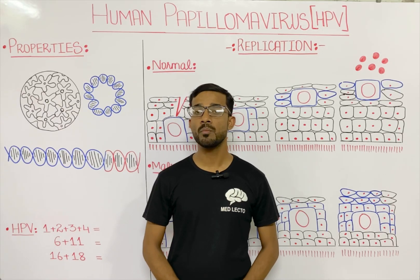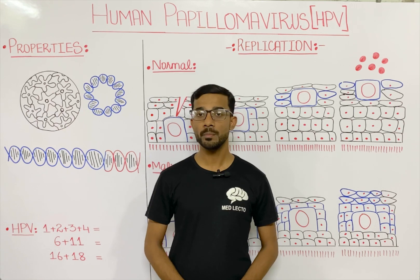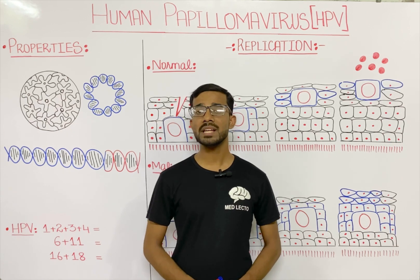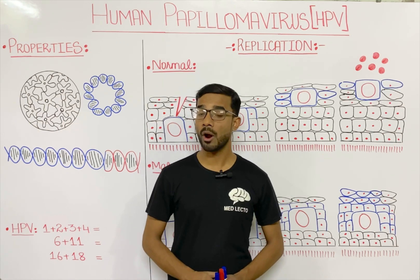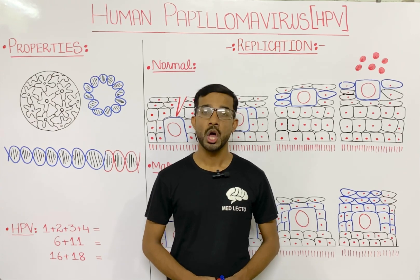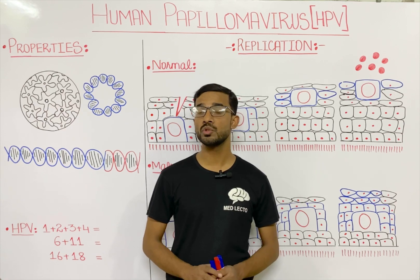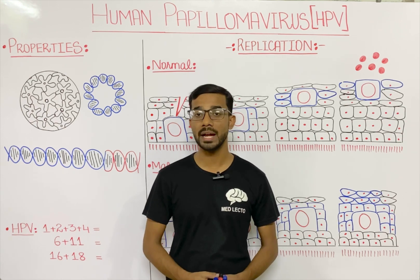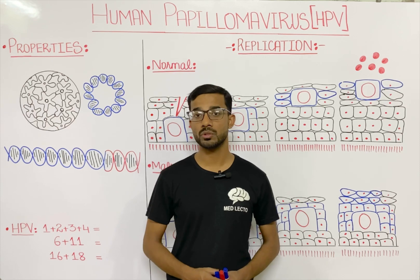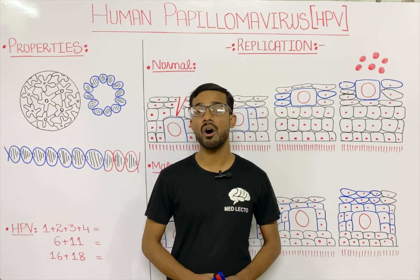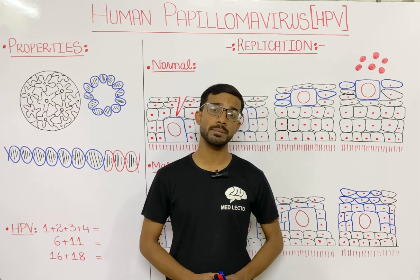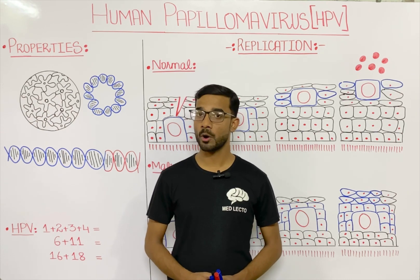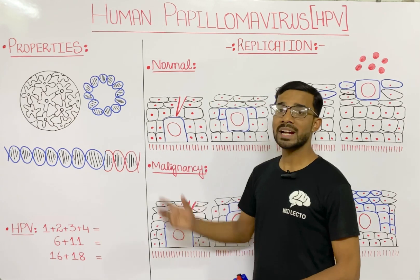In this lecture we are going to discuss the two most important aspects of the human papilloma virus: first is the properties and second is the replication. Human papilloma virus actually causes two most important diseases - first it causes papilloma, which is a benign tumor of the squamous cells also known as warts, and second it is the cause of cancer of three important parts of our body: cervix, anus, and the penis.